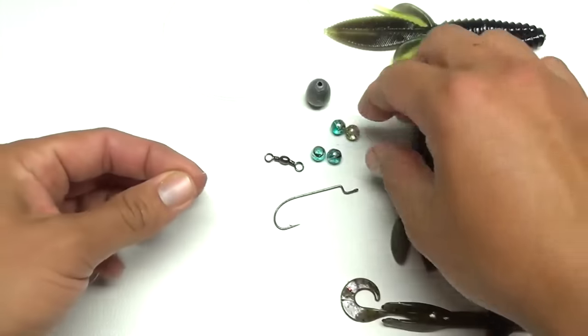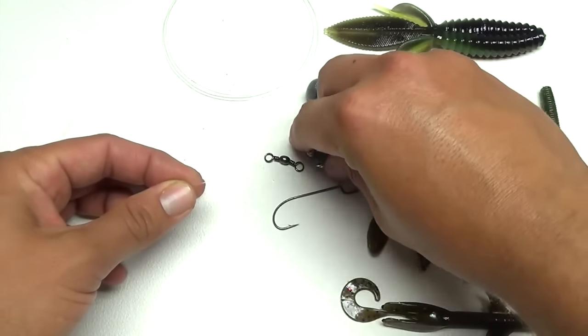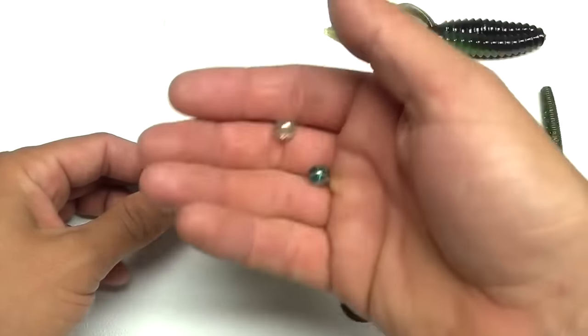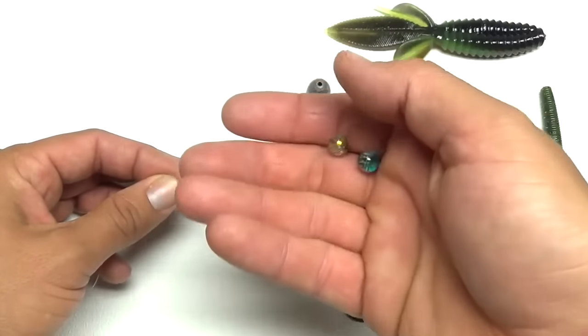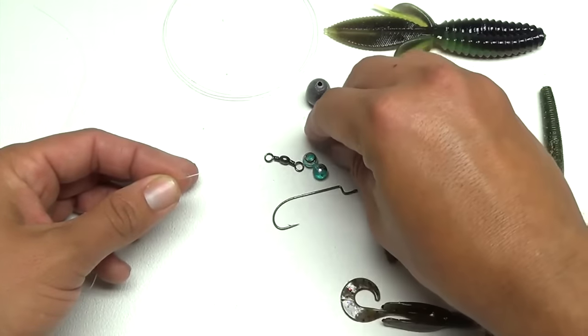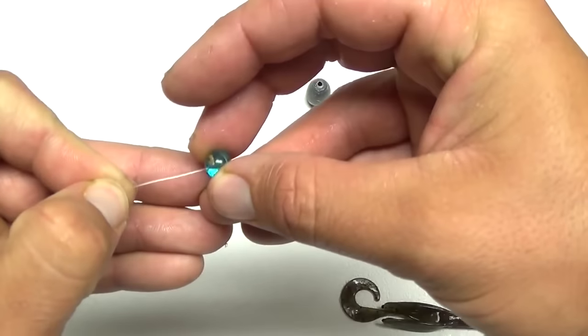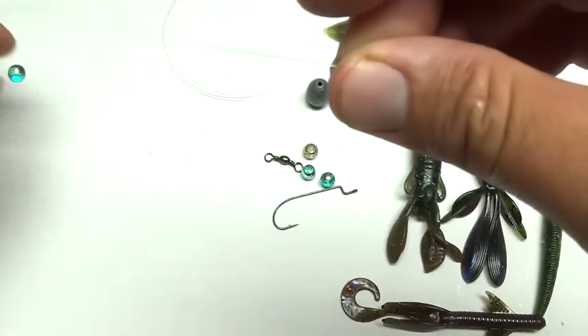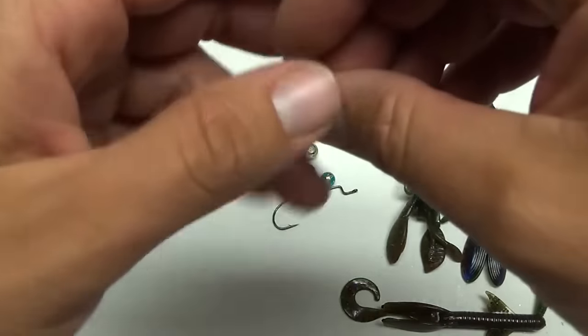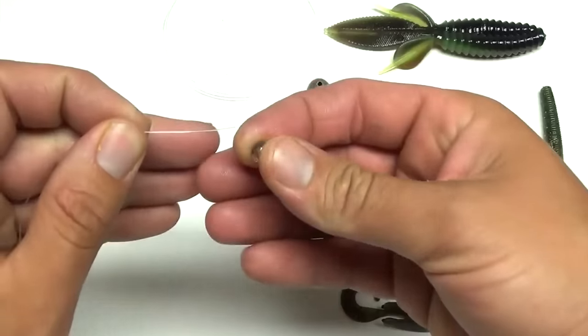And the next thing you want is these little glass beads here. You can get these, I always buy mine at like a hobby store or a craft store. They're really cheap. You can get bags of a hundred of them, but just take a couple beads. A lot of times, kind of the standard is just one glass bead, but I like to do two.